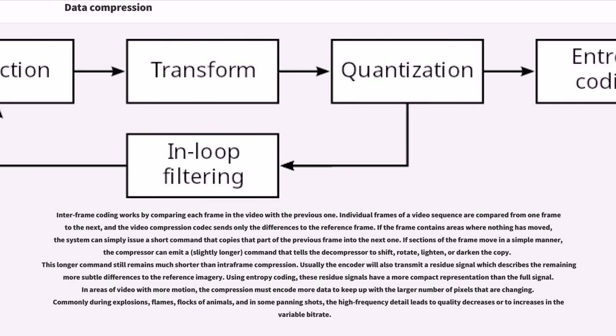Interframe coding works by comparing each frame in the video with the previous one. Individual frames of a video sequence are compared from one frame to the next, and the video compression codec sends only the differences to the reference frame. If the frame contains areas where nothing has moved, the system can simply issue a short command that copies that part of the previous frame into the next one. If sections of the frame move in a simple manner, the compressor can emit a slightly longer command that tells the decompressor to shift, rotate, lighten, or darken the copy. This longer command still remains much shorter than intra-frame compression. Usually the encoder will also transmit a residue signal which describes the remaining more subtle differences to the reference imagery. Using entropy coding, these residue signals have a more compact representation than the full signal. In areas of video with more motion, the compression must encode more data to keep up with the larger number of pixels that are changing. Commonly during explosions, flames, flocks of animals, and in some panning shots, the high frequency detail leads to quality decreases or to increases in the variable bitrate.